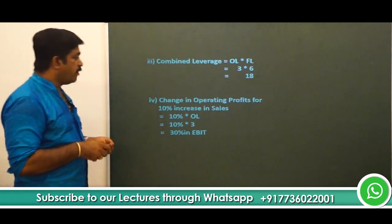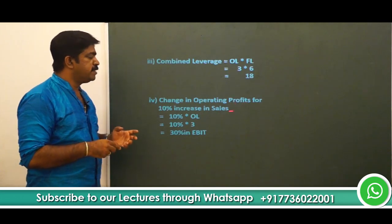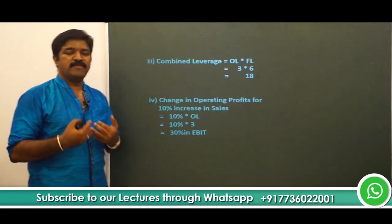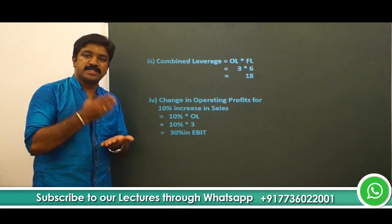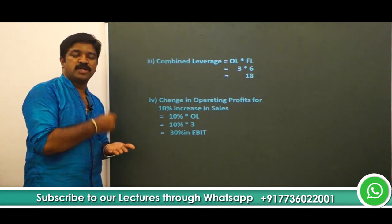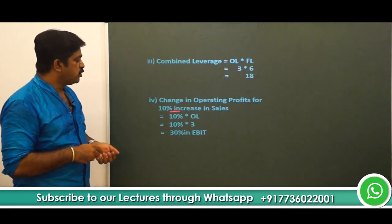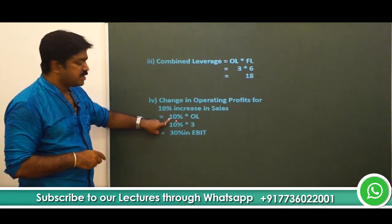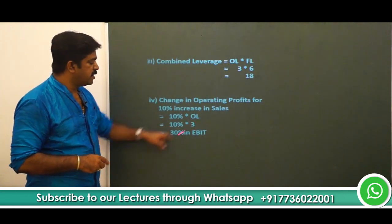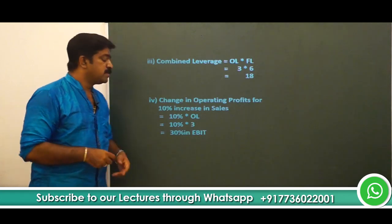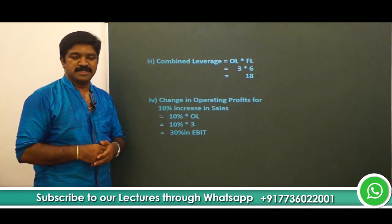For question 4, we have to find what will be the change in operating profit — that is, the change in EBIT if there is a 10% increase in sales. Here we apply the knowledge gained through operating leverage. When there is a change in sales, the change in EBIT is linked with operating leverage. The change in sales is 10%, and operating leverage is 3 times, so the change in EBIT will be 10% × 3 = 30%. EBIT will increase by 30% for a 10% increase in sales.